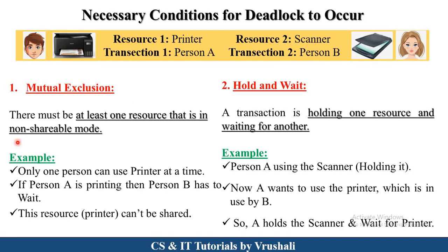The first condition is mutual exclusion. It means that at least one of the resources is in non-shareable mode. For example, person A uses the printer for printing. At the same time, person B also wants the printer, but this is not possible because the printer is a resource used by only one person at a time — it is a non-shareable device. So this is called mutual exclusion: one person uses the resource and the next person wants the same resource.